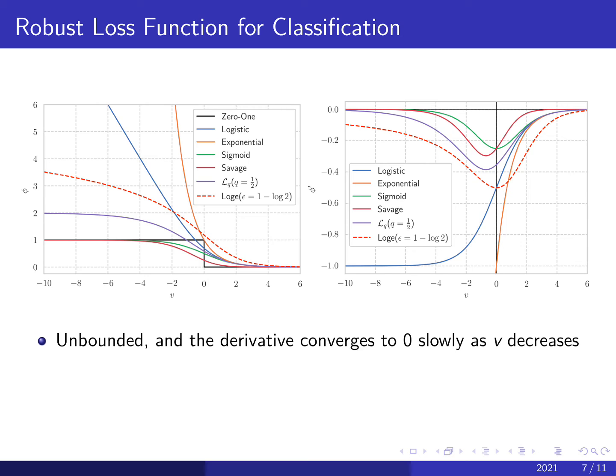First, while it helps to prevent outliers from dominating the training loss, it is unbounded compared to Savage and LQ loss. And the derivative converges slowly to zero as V decreases, meaning that it still provides non-negligible gradient signals for the misclassified samples as desired. Second, the maximum gradient magnitude occurs at V equals to zero, which enhances the gradient signal near the decision boundary, which is important for classification. The only other loss function with a maximum gradient at zero is the sigmoid loss. However, its tail converges to zero very fast, which can lead to a vanishing gradient problem.